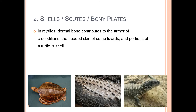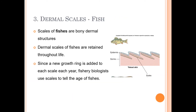The shell, scutes, and bony plates are specialized dermal derivatives of reptiles. The shell of a turtle is made up of specific dermal bone. The spiny structures seen in the crocodile image are also dermal bones called scutes. The bony plates in lizards and other reptiles are all types of planar bones produced from the dermis.